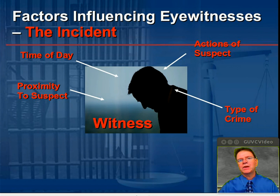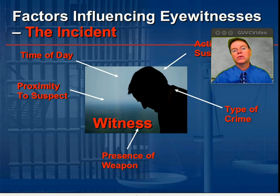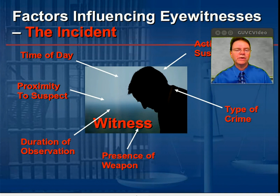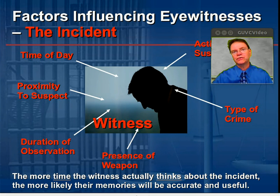The type of crime being committed is also going to impact a person's memory. Is it something as common as shoplifting, or was there violence involved? Was a weapon involved as well? Sometimes a witness is going to focus more on that weapon rather than, for example, what the perpetrator was wearing or the color of their eyes. Also, the duration of the observation makes a difference — was the event something the witness only observed for a few seconds, or were they in the same room with that perpetrator for an extended period? The more time a witness thinks about the incident, particularly when it's happening, the more likely their memories will be accurate and useful in making an identification.